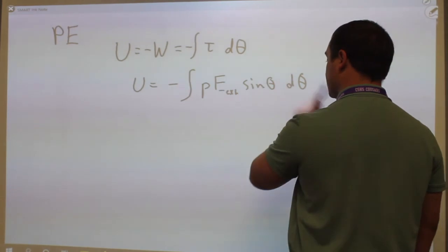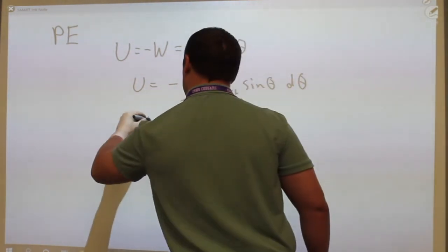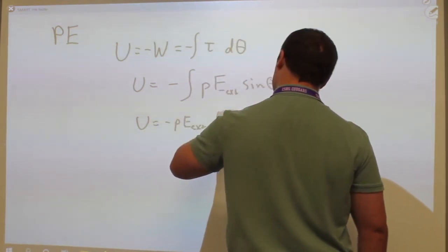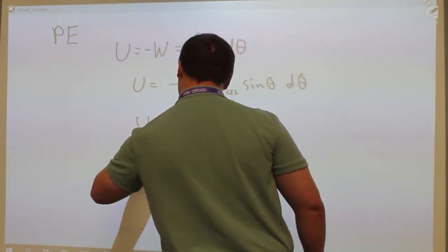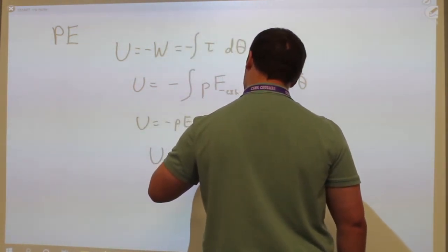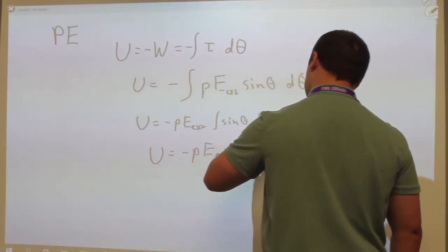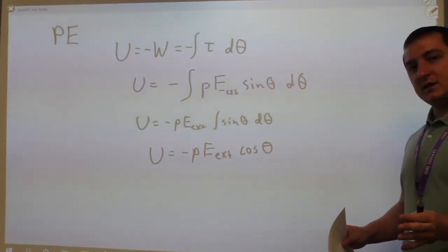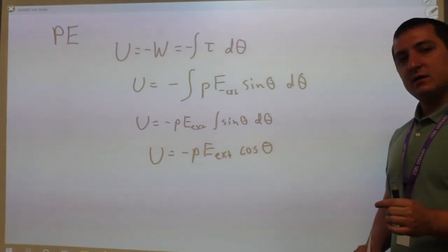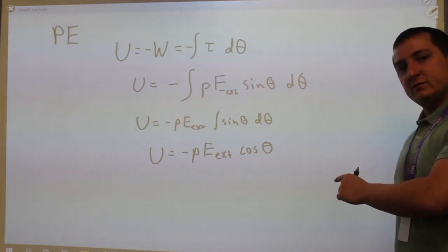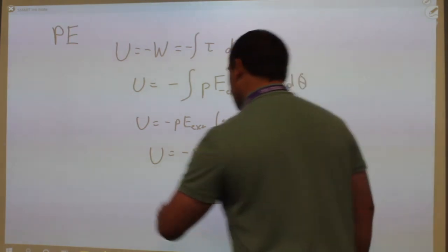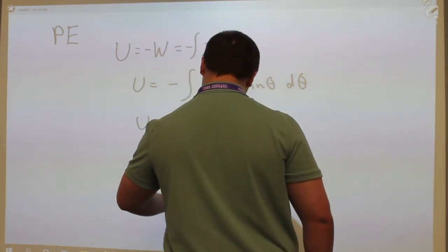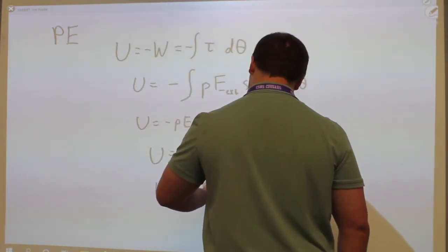p and E_ext don't depend on θ, so I can take them out. U equals −p·E_ext integral of sin θ dθ. The integral of sine is cosine, so we get p·E_ext·cos θ. Just like you should have recognized the previous one as a cross product with a sine, now you have a cosine, which gives you a dot product. So I can write U equals −p⃗ · E⃗_ext.